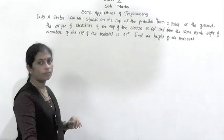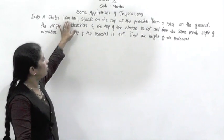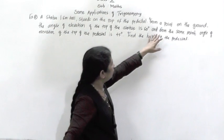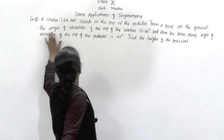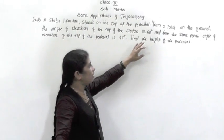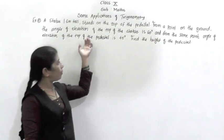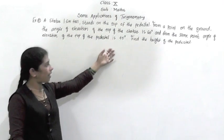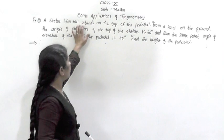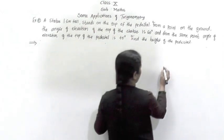Now we will see the next example. A statue is 1.6 meters tall and stands on the top of the pedestal. From a point on the ground, the angle of elevation of the top of the statue is 60 degrees. And from the same point, the angle of elevation of the top of the pedestal is 45 degrees. Find the height of the pedestal.